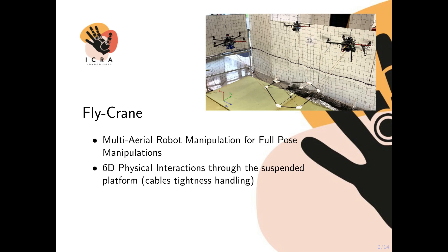In this work, such a redundant system has been provided with the capabilities of interacting with the external environment. This means that accurate control of external forces and moments on the payload requires that each robot always guarantees that a six-dimensional wrench is exerted on the platform, even if contacts with the environment can affect cable tightness.